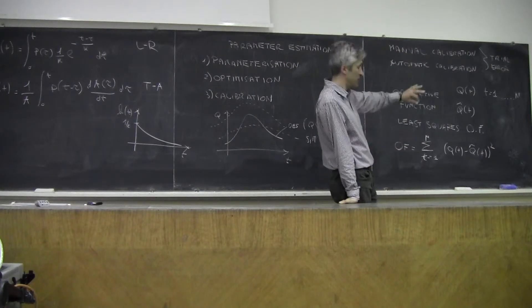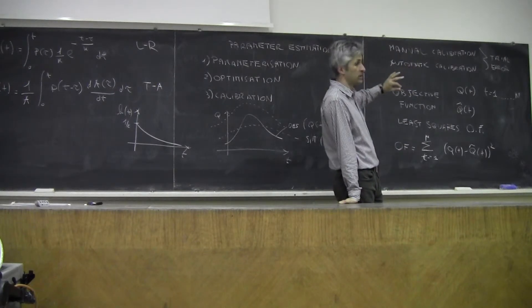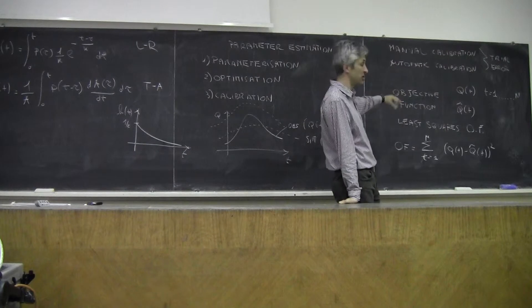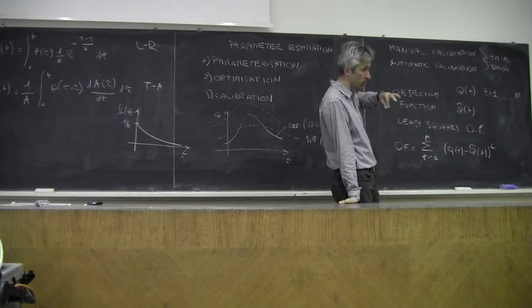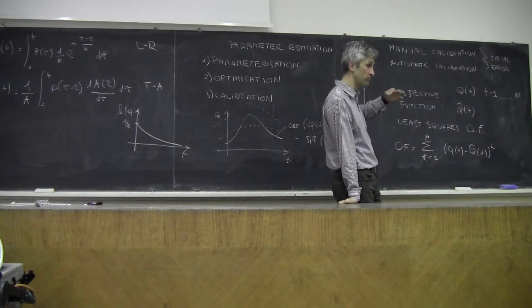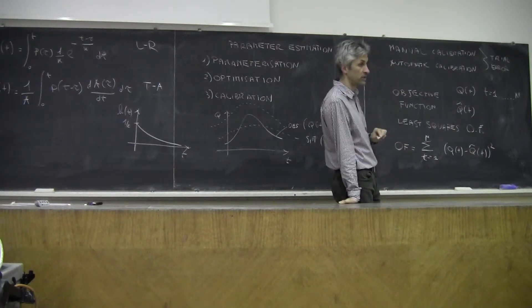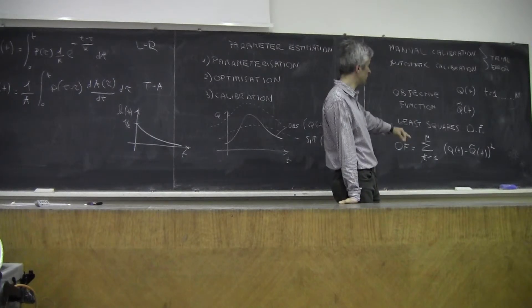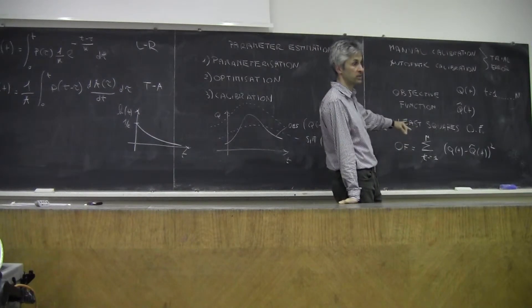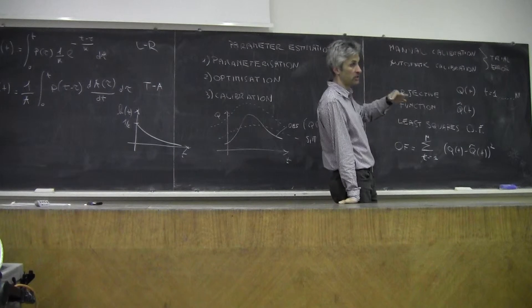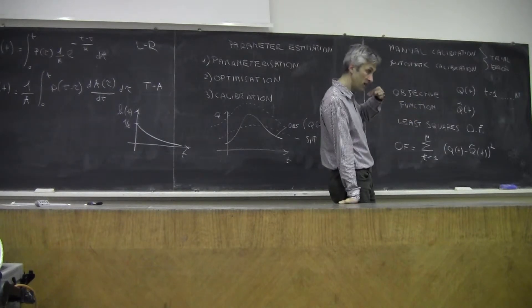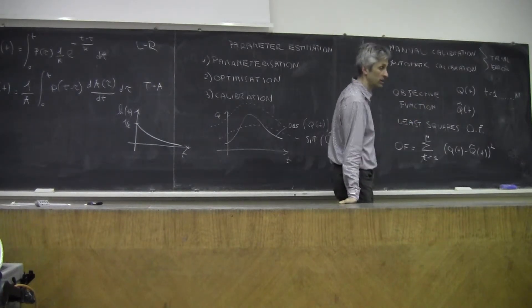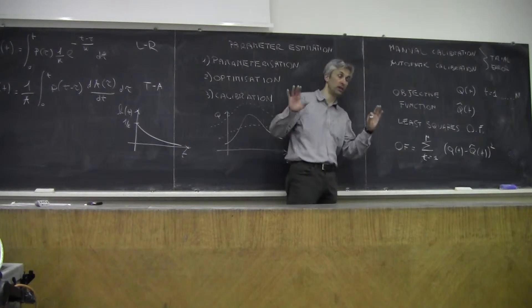Basically, you see the difference between observed and simulated data, and the difference is squared. Why? The simple explanation is that you want to avoid the compensation between positive and negative errors. If you don't square the difference, you may have the case in which negative errors are compensated by positive errors. If you square them, you make everything positive and therefore you avoid the compensation.